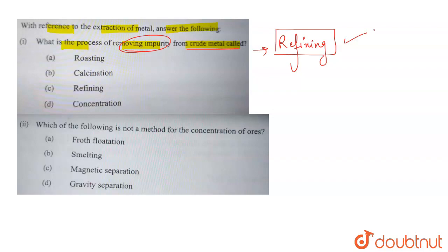Electrolytic refining of copper is a very common process, and vapor phase refining is also one of the techniques used for refining crude metal. The correct answer for this question is option C: refining is the method used to remove impurity from crude metal.